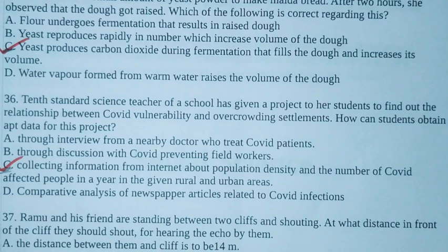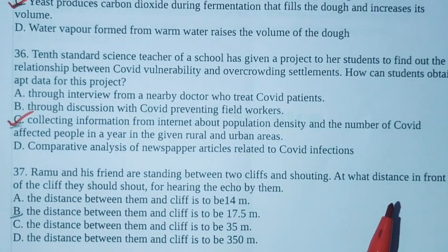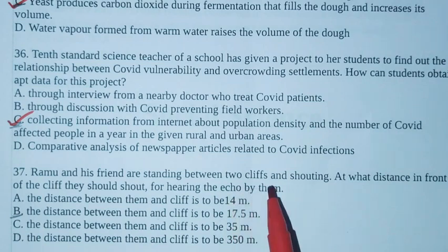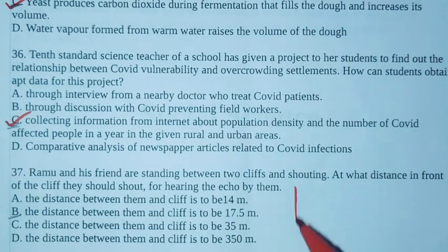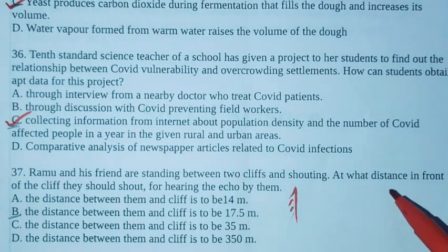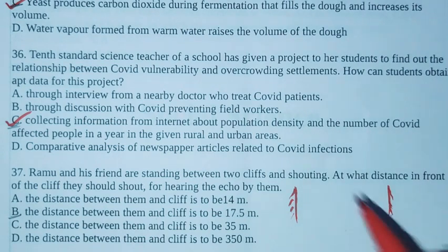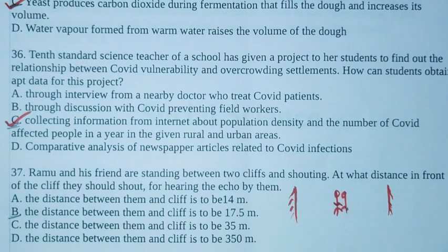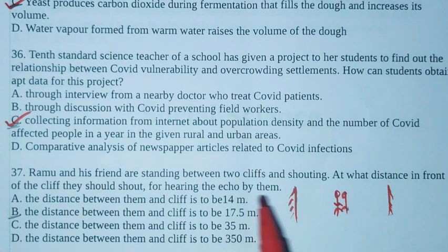Next 37th. Ramu and his friend are standing between two cliffs and shouting. There is one cliff, another cliff, and in the middle two friends are shouting. At what distance in front of the cliff they should shout for hearing the echo by them?